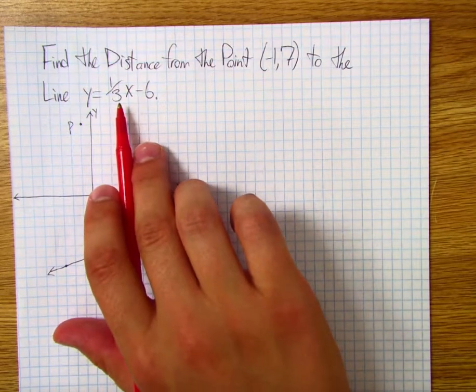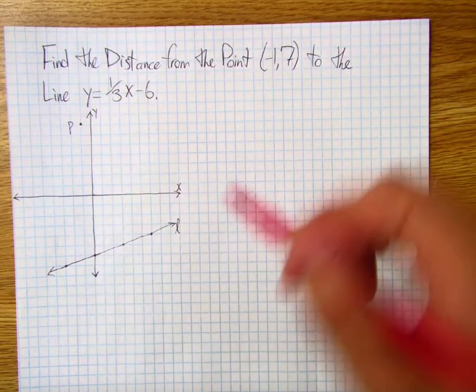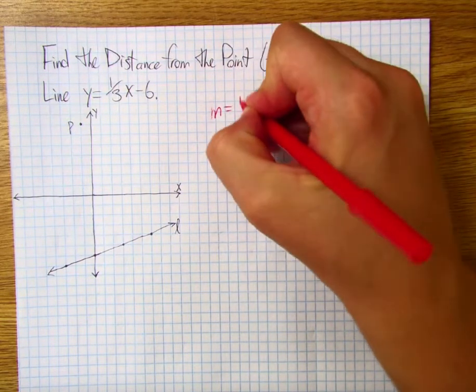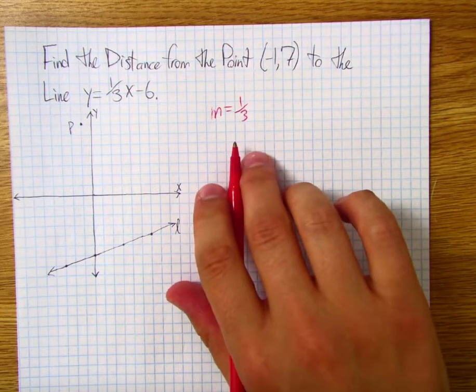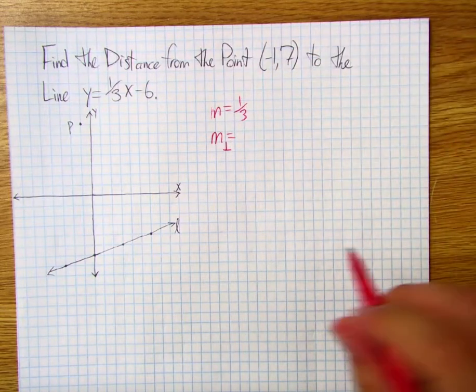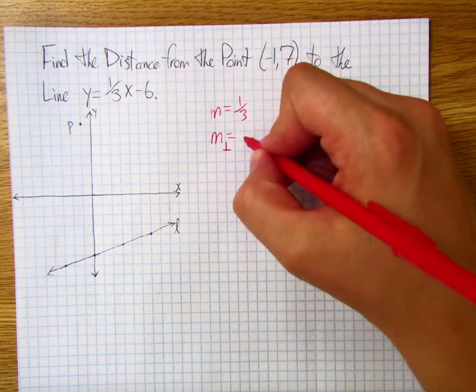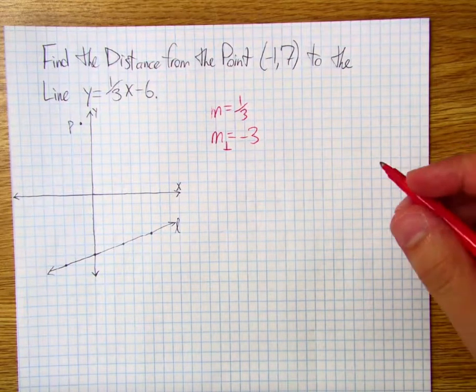And if you remember back to Algebra 1, you'll notice that if we have an equation, a linear equation like this, in which we know slope, slope is in this case 1 third, then we should always be able to figure out what our perpendicular slope is going to be. In this case, the perpendicular slope is the opposite reciprocal of one third, which is going to give us a negative 3 over 1, or just negative 3.